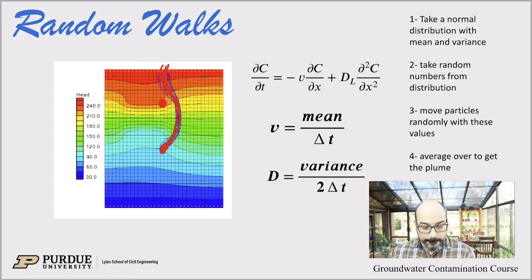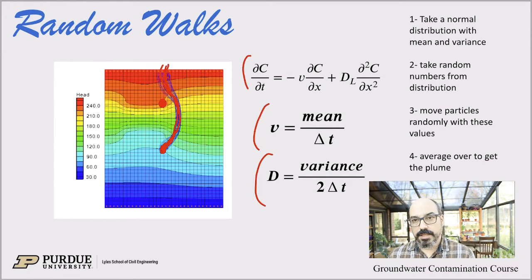Again, those particle tracking are very handy because you can just release a bunch of particles and watch where they're going. Now the two things we need: our diffusion equation or advection dispersion equation is literally defined by two parameters, the advection and the dispersion. That's why we call it advection dispersion. So if we know the advection and the dispersion we know everything there is to know about the transport. What we can do is take a normal distribution with a known mean and variance. I remind you that the dispersion coefficient is the variance basically over time, and then the velocity is the mean over time, lengths over time.